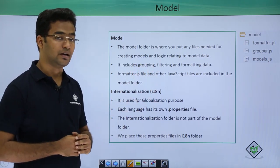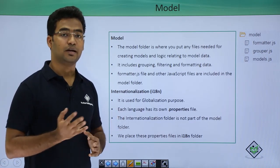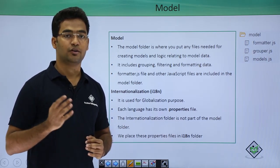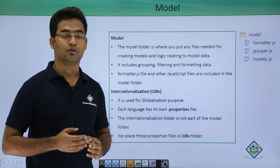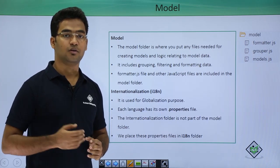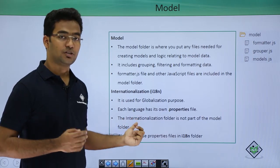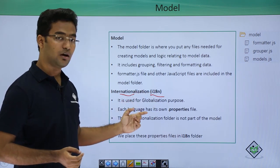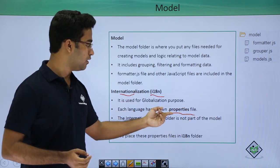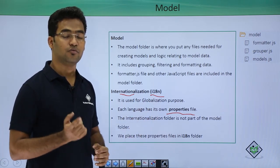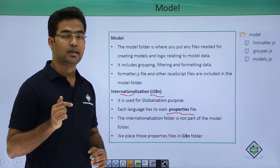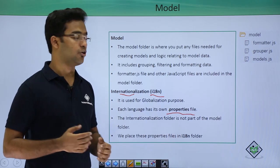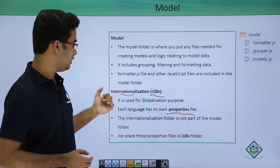Then we have internationalization: if we are using the application for a global purpose, the language of the application changes according to the user's region — for example, English for the USA, German for Germany. The folder is named i18n, and within it we create .properties files. For an English file we name it i18n.en.properties; for a German file, i18n.de.properties. All these files are maintained in the internationalization folder.